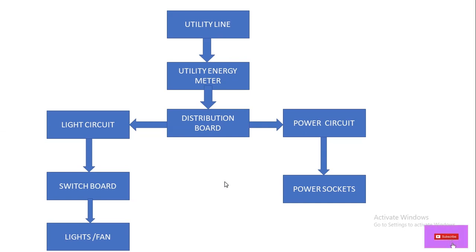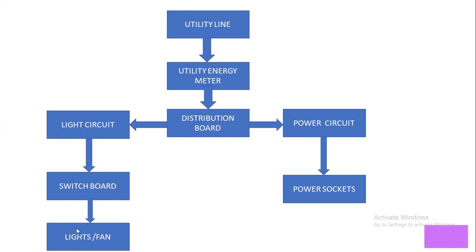So in this way power is distributed in our home — from utility line to energy meter, from energy meter to the main distribution board, and from the distribution board through the light circuit to the switchboard, and from the switchboard to the lights and fans. The lights and fans are controlled through the switchboard switch, while power is fed directly from the distribution board to the power sockets.